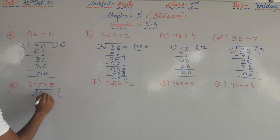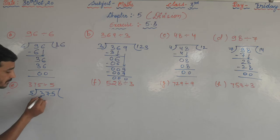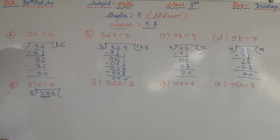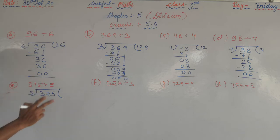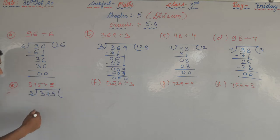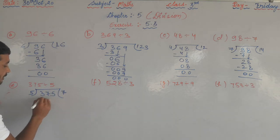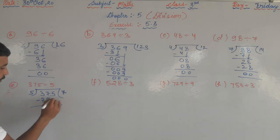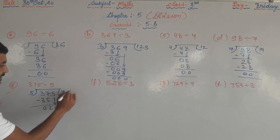Next, 375 divided by 5. First digit 3 is less than 5, so take two digits: 37. Count up the fives table — 5×7 is 35, 5×8 is 40, which is greater than 37 — so take 5×7=35. Subtract: remainder 2. Bring down 5 to get 25. Five fives are 25, remainder 0. The quotient is 75.